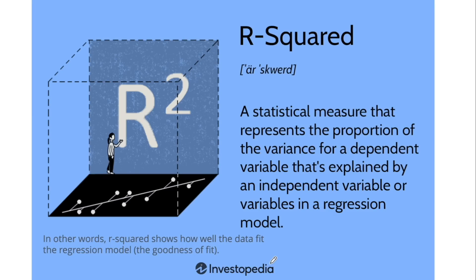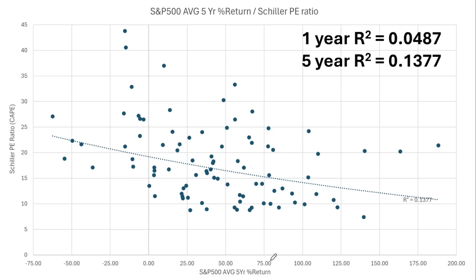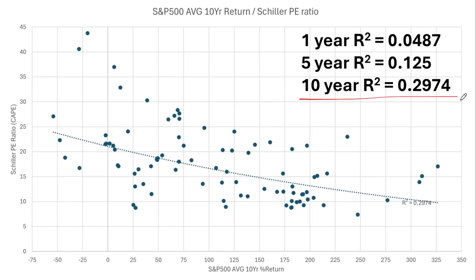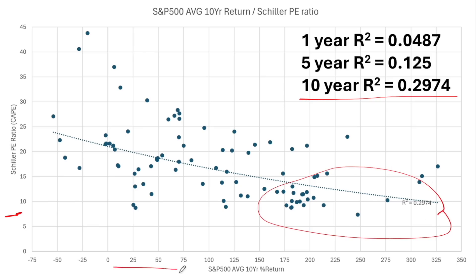R-squared is a statistical measure that represents the proportion of the variance for a dependent variable that's explained by an independent variable or variables in a regression model. In other words, R-squared shows how well the data fit the regression model. If we turn to five years, you can see that already at five years we have a trend, but still not that important. At 10 years, things are getting clearer. The lower the Shiller PE ratio, the higher will be your 10-year returns. The higher the Shiller PE ratio, the lower will be your 10-year average S&P 500 return.